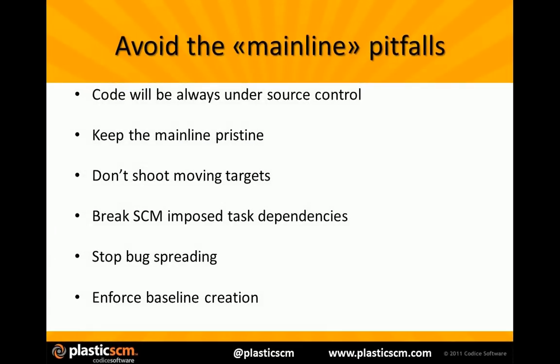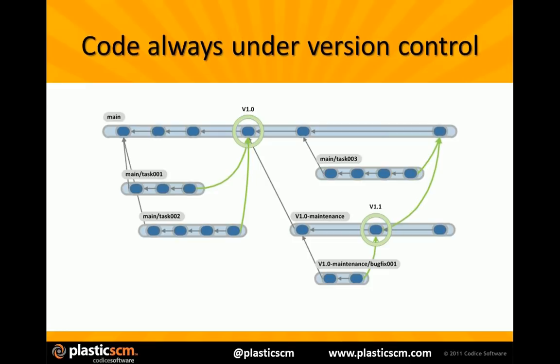Now I'm going to cover what we call the mainline pitfalls. When you're working on a single branch, you have different problems. Your code won't always be under version control — it's either in your workspace on your machine, or it's in the repository, with no intermediate point. But if you use a branch for your own task, you can check in as often as you need. Your code is under version control, it's protected, and you have a security network protecting you from losing code.